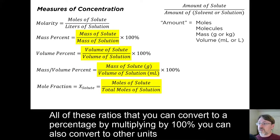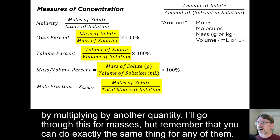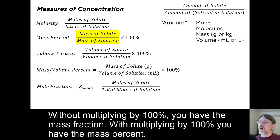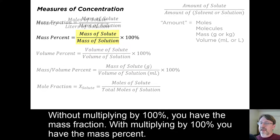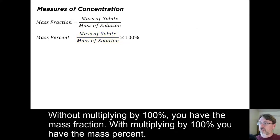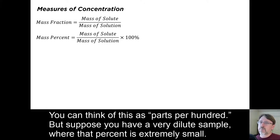All of these ratios that you can convert to a percentage by multiplying by 100%, you can also convert to other units by multiplying by another quantity. I'll go through that for masses, but remember that you can do exactly the same thing for any of them. Without multiplying by 100, you have the mass fraction. With multiplying by 100%, you have the mass percent. You can think of this as parts per hundred.